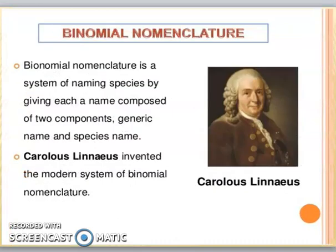Next we have a very important topic: binomial nomenclature. We have a lot of organisms, and we needed a way to identify and name them. Binomial nomenclature means two names — a system in which each species is given two names: one generic name and one species name. This system was founded by Carolus Linnaeus.